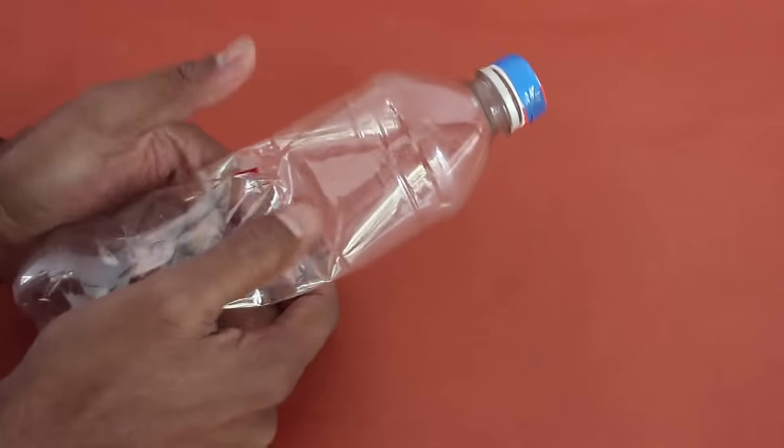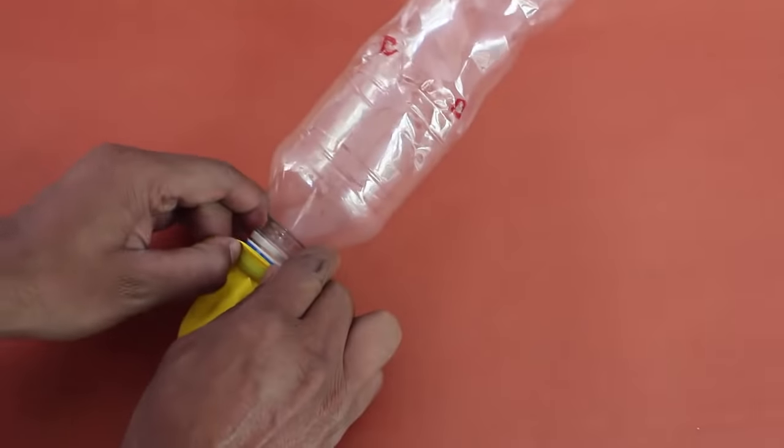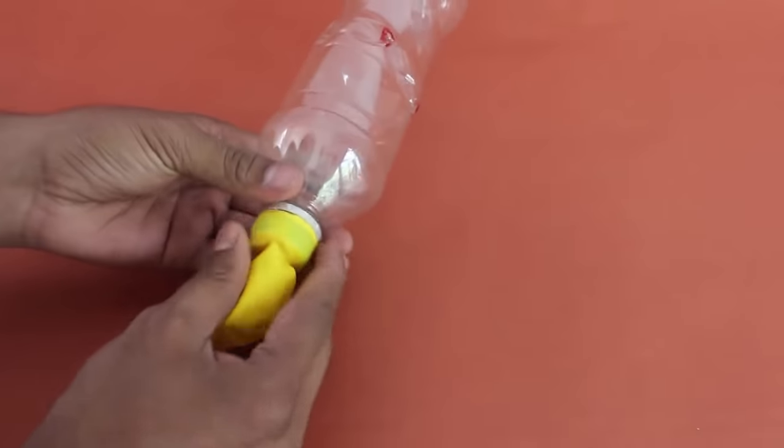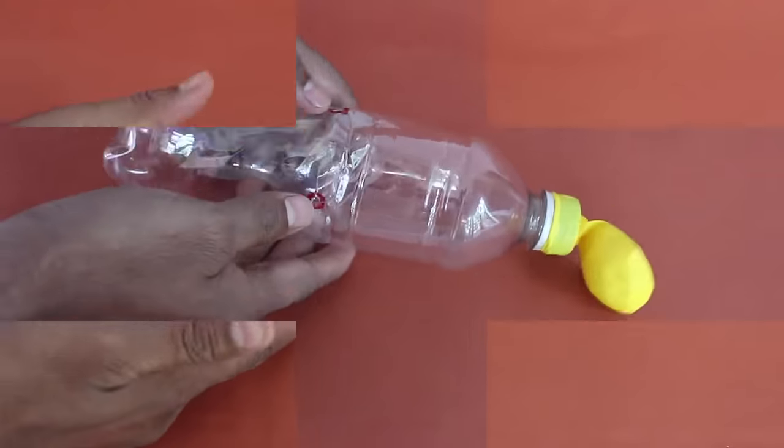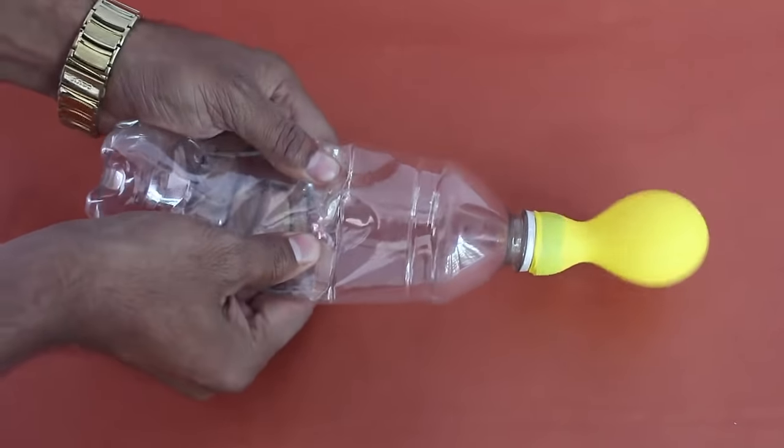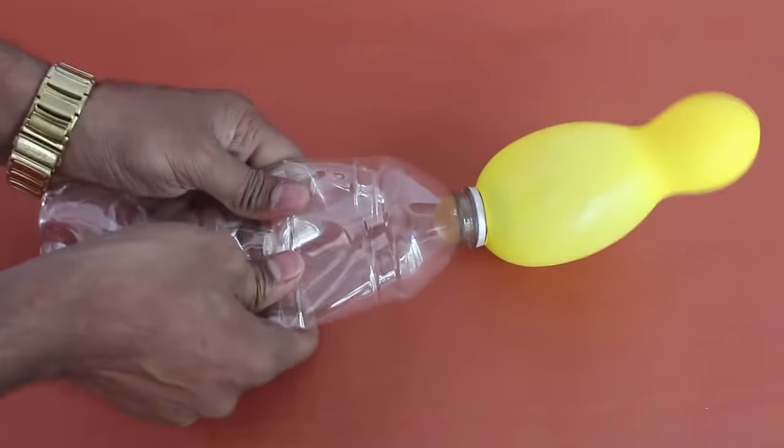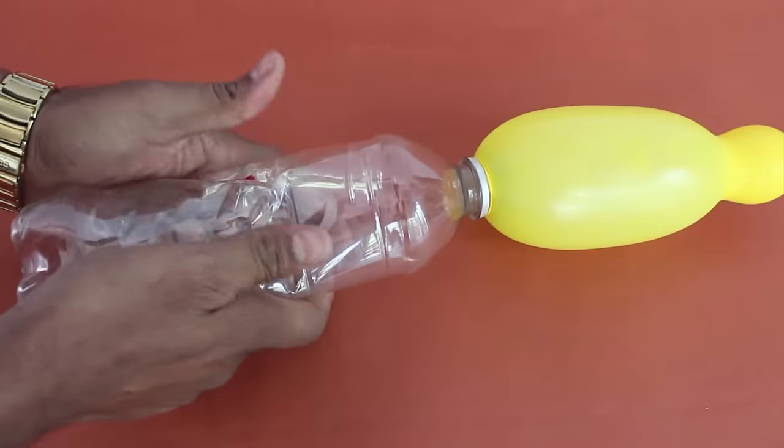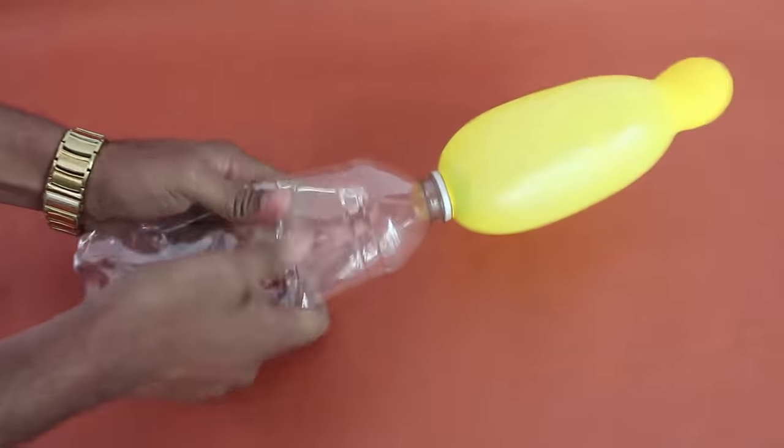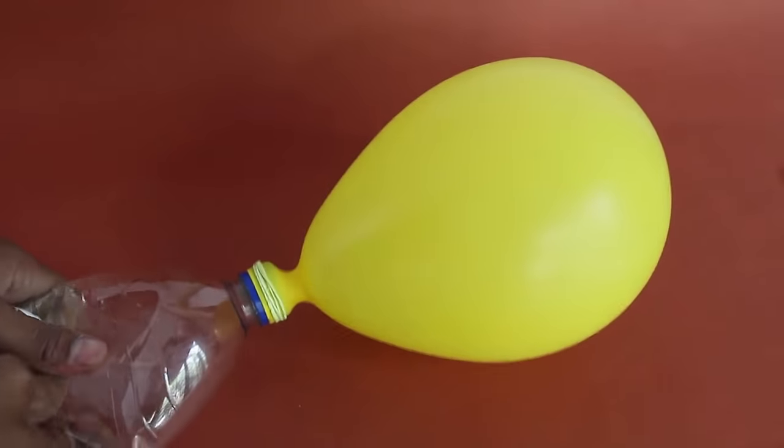Shut the holes with both thumbs and press the bottle, then open the thumbs. The air will enter the yellow balloon. The air in the balloon cannot escape because of the valve. Repeat the pressing and releasing of the bottle to inflate the balloon.